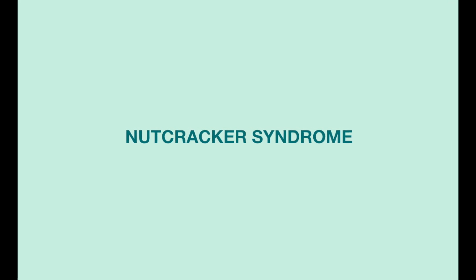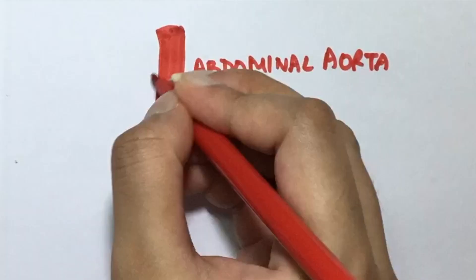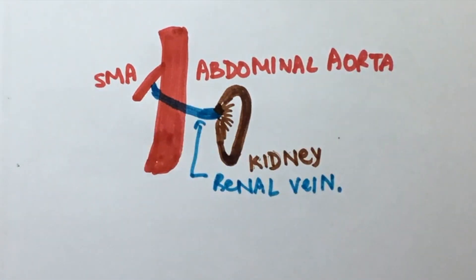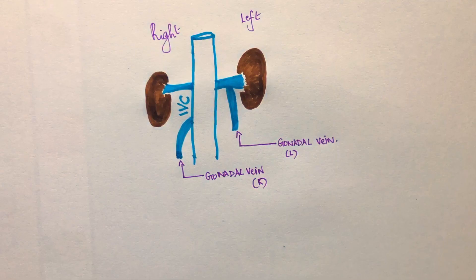The renal vein runs between the superior mesenteric artery and the aorta, so there is a high chance of it getting compressed between these two structures. Compression of the renal vein will lead to backing up of blood in the kidney, leading to congestion. This would result in flank pain and hematuria. Recall that on the left side, the gonadal vein empties into the renal vein, so this would lead to pelvic congestion as well.